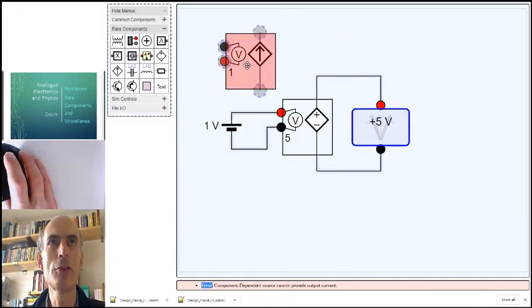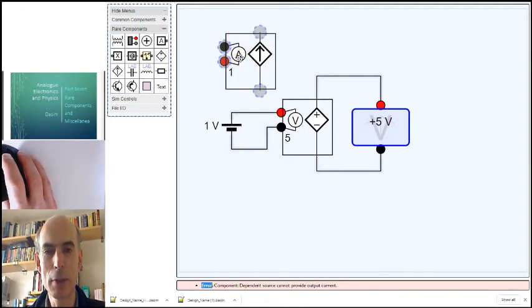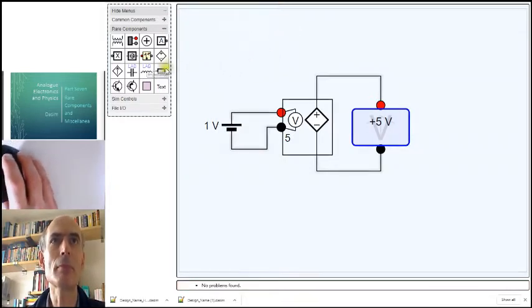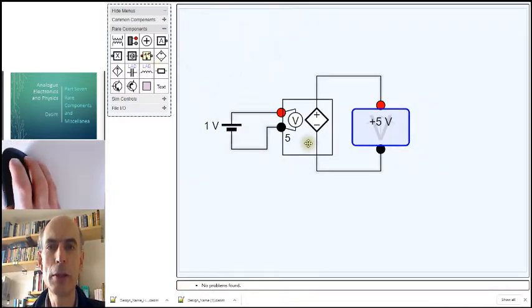If I double click on this, we end up here. That is a current source which is dependent on the reading on an ammeter that's part of the input circuit. So whatever current is flowing in its input circuit would be multiplied by 1, and that is the current that it's trying to force through its output terminals. They're useful in modelling the behaviour of more complex circuits.